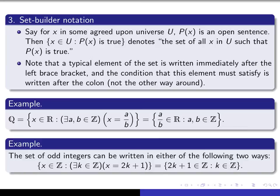We can also describe the set of odd integers using set builder notation. You see the brace brackets and the colon, so you read this as: the set of all integers x such that there exists an integer k such that x equals 2k + 1. Another way of saying the same thing is: it's the set of things of the form 2k + 1 in the set of integers such that k is an integer. This is what a typical element looks like, and the condition is that k must be an integer.